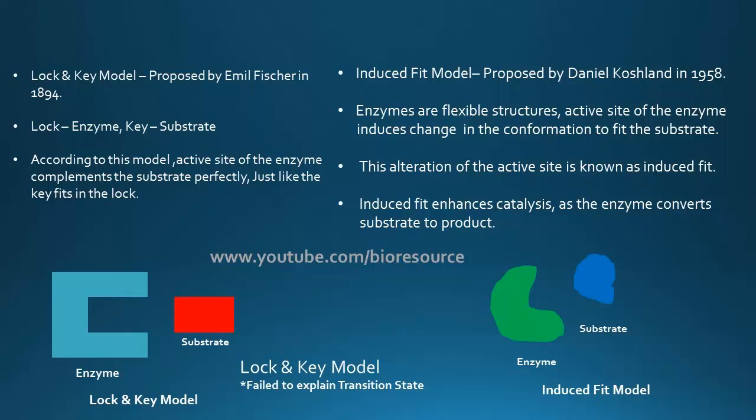Later on, the induced fit model was proposed by Daniel Koshland in 1958. According to this model, enzymes are flexible structures and the active site of the enzyme induces a change in conformation to fit the substrate. This alteration of the active site is known as the induced fit, which enhances catalysis as the enzyme converts substrate to product. This is the most accepted model of enzyme binding to the substrate.